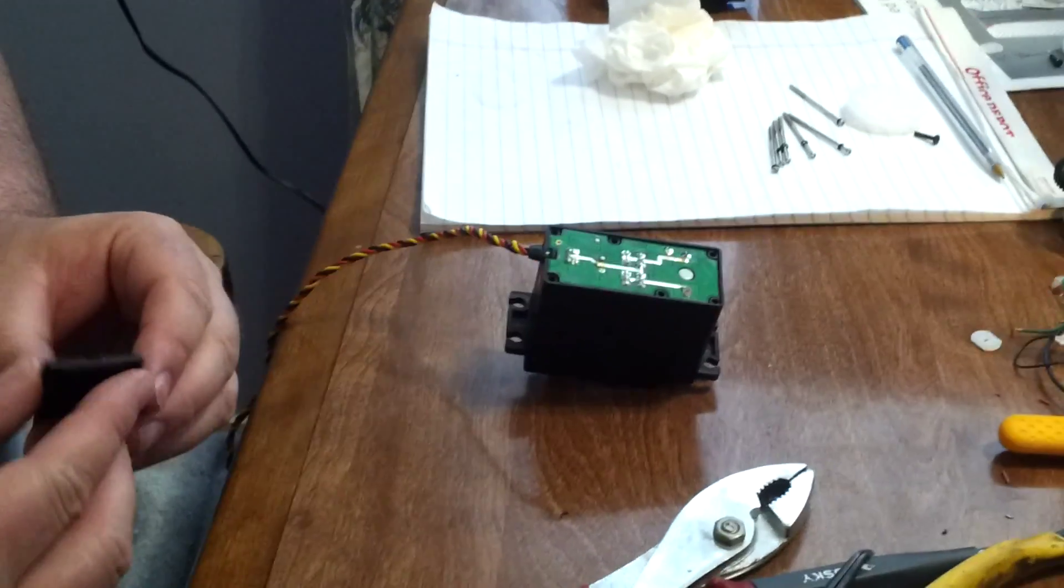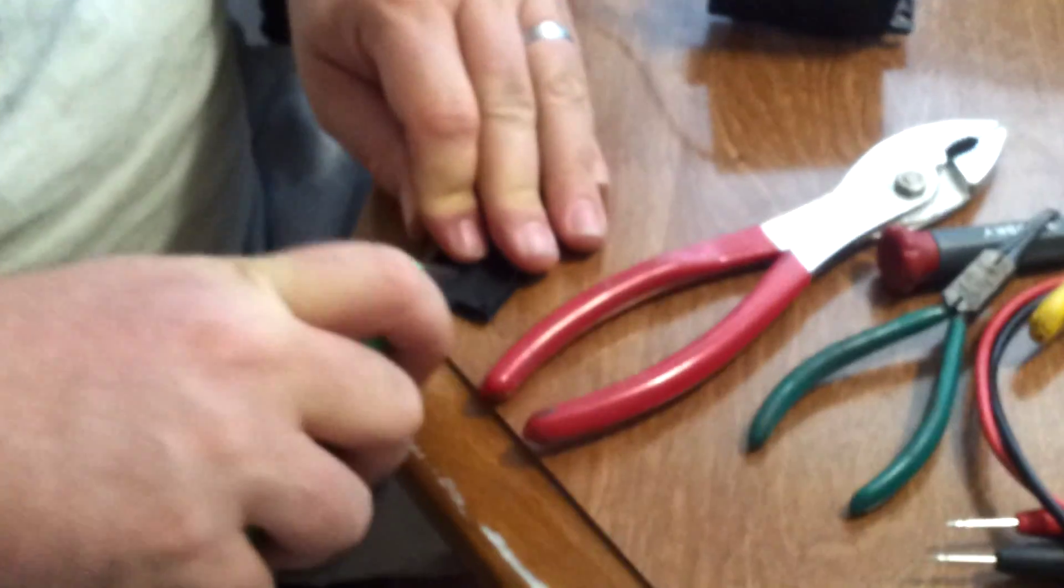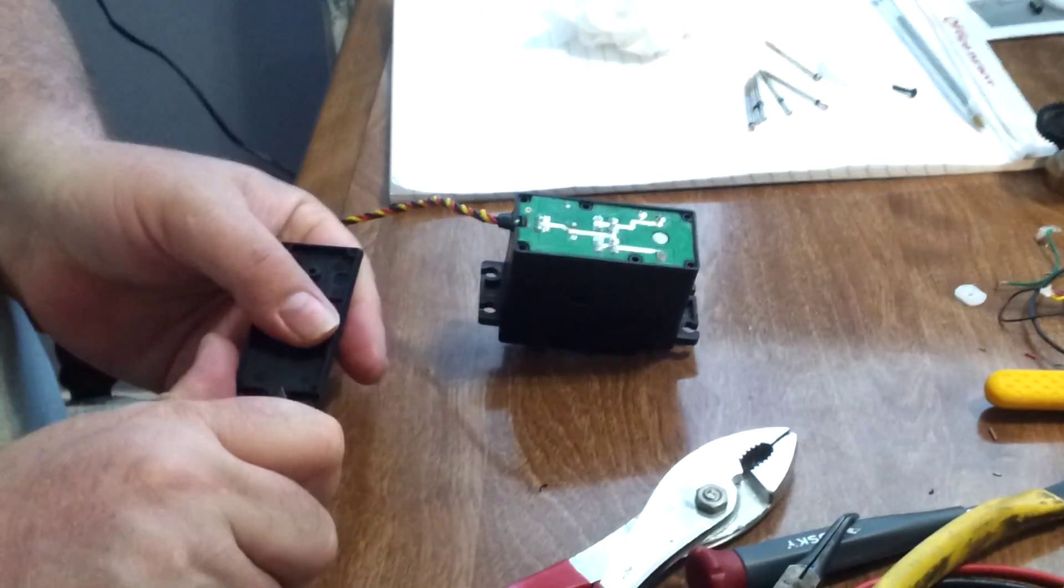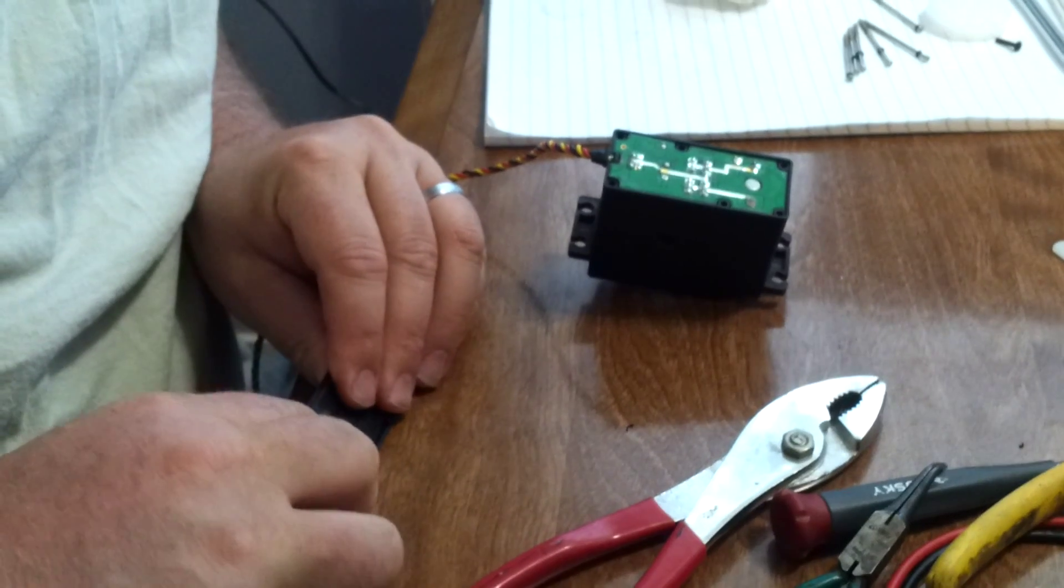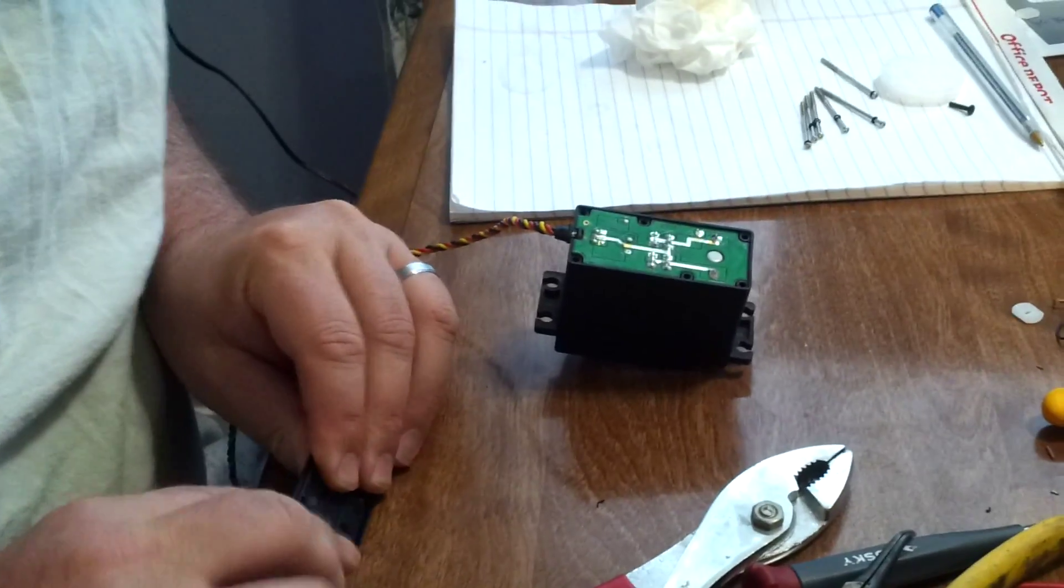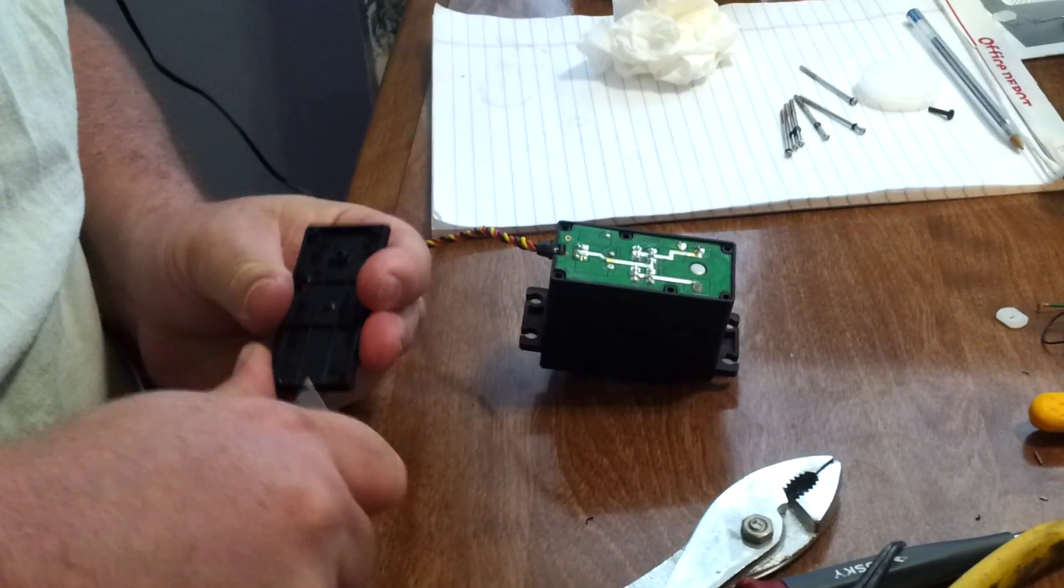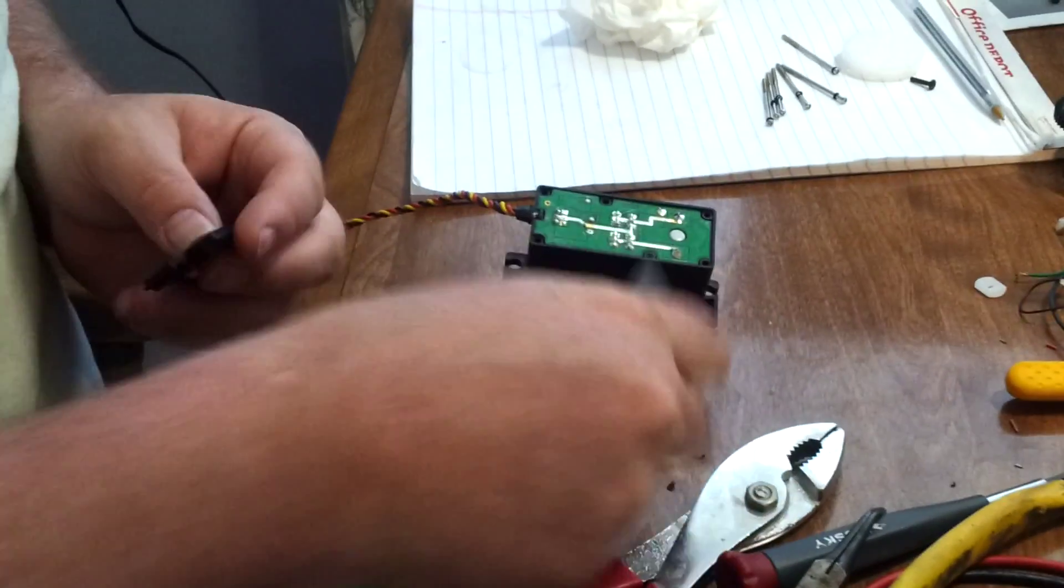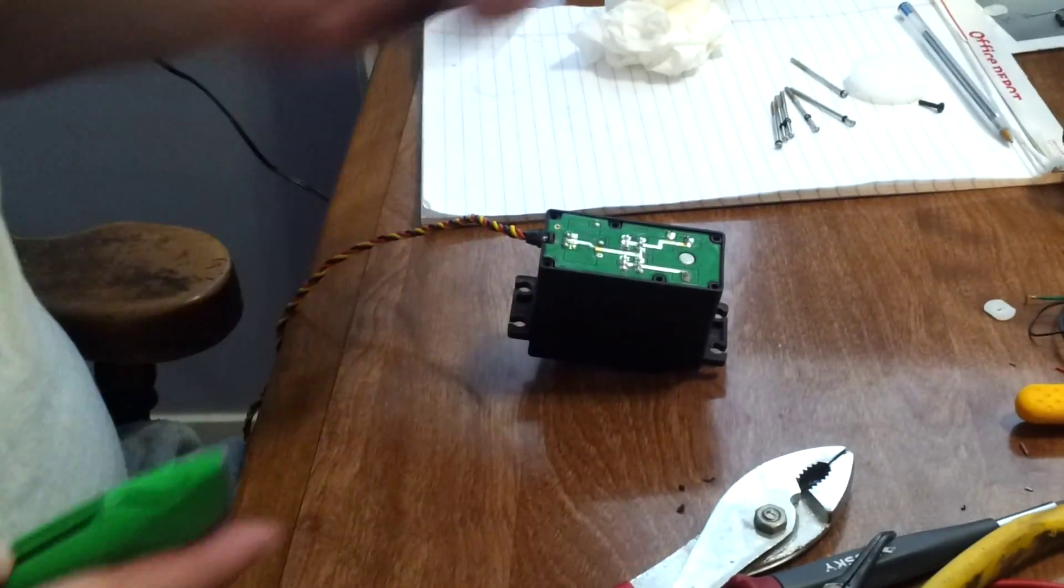Now one of the things I do is I take and trim this open a little bit more so that I have a place for my new wires to come out of. It doesn't have to be big, but you do want it smooth because if you've got any little ridges in there they can cut your wires and you don't want that.